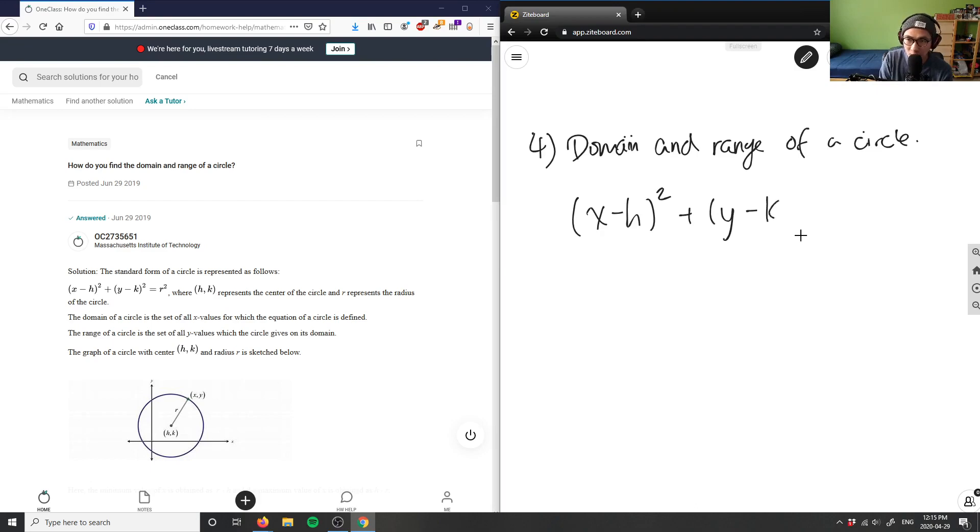So this equals r squared here. This here would be an equation of a circle. I have (x - h)² + (y - k)² = r², where h and k here are the center of the circle and r here is the radius.